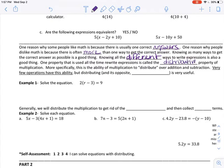More specifically, this is the ability of multiplication to distribute over addition and subtraction. Very few operations have this ability, but distributing and its opposite called factoring is very useful. You'll learn more about factoring next year.